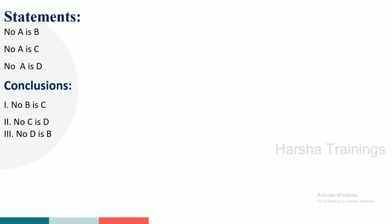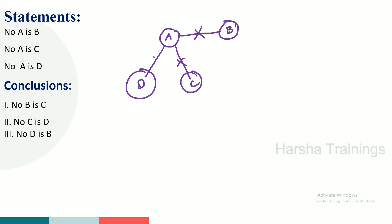Moving on to the next question. No A is B — so A and B have no relation. Next: No A is C. Next: No A is D. A and B, A and C, and A and D all have no relations. So I will draw this fast.